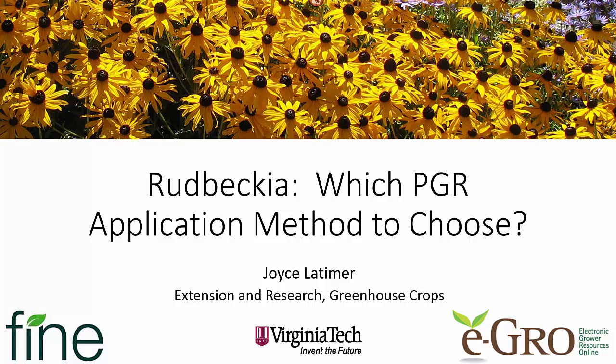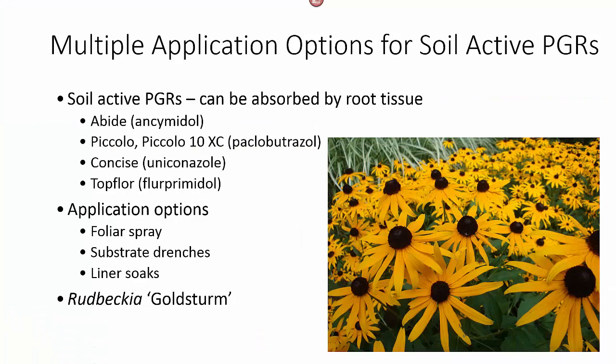Hello, this is Joyce Latimer from Virginia Tech, and we're going to talk today about which plant growth regulator application method you should use. We're going to use an example crop of Rudbeckia Goldsturm. There have been some videos out on how to do appropriate sprays, appropriate drenches, and liner soaks to get the best results, but how do you decide which one of those to use, assuming they all work well?